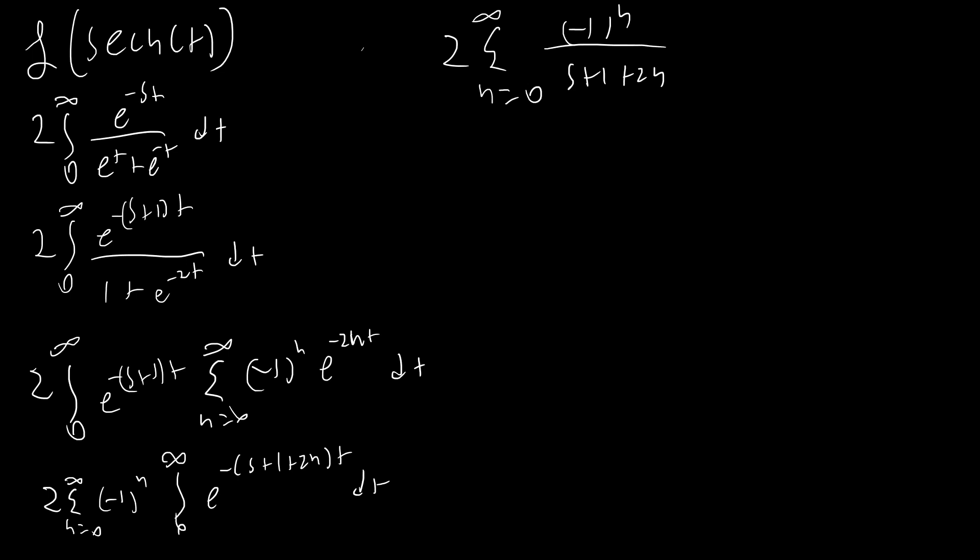The integral we end up with is actually pretty simple — you can do it by replacing s with s plus 1 plus 2n in the formula for the Laplace transform of 1. What we get is the sum from n equals 0 to infinity of (-1)^n over (s + 1 + 2n). This series is convergent since it's alternating and decreasing. But if we split up the terms into positive and negative parts, each of those series will be divergent, similar to the harmonic series. We're going to rearrange the terms into a more useful form.